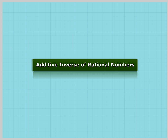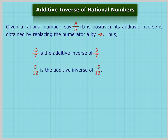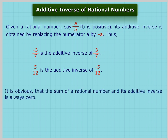Additive inverse of rational numbers. Given a rational number a/b where b is positive, its additive inverse is obtained by replacing the numerator a by -a. Thus, -3/7 is the additive inverse of 3/7, and 5/12 is the additive inverse of -5/12. It is obvious that the sum of a rational number and its additive inverse is always zero.